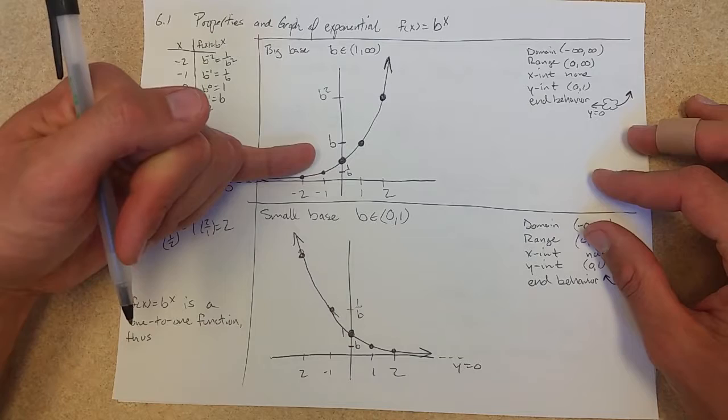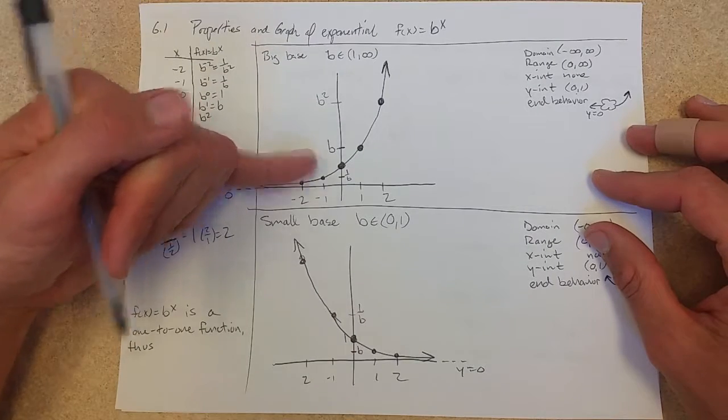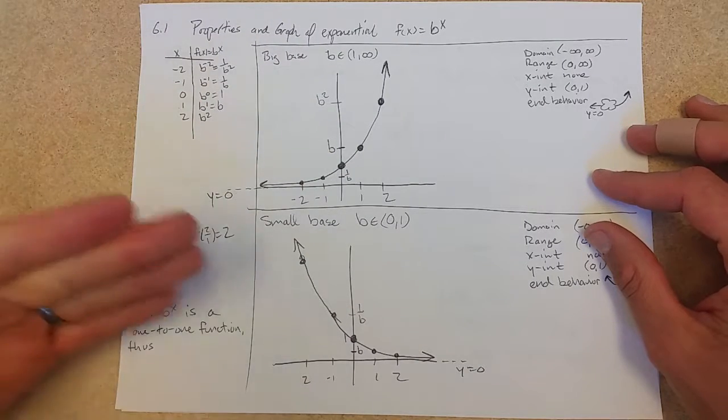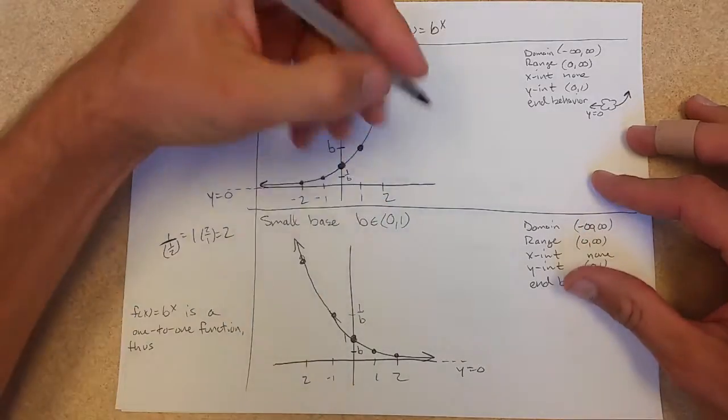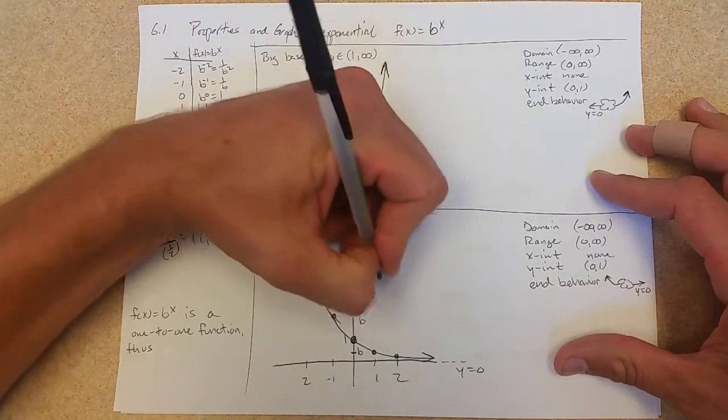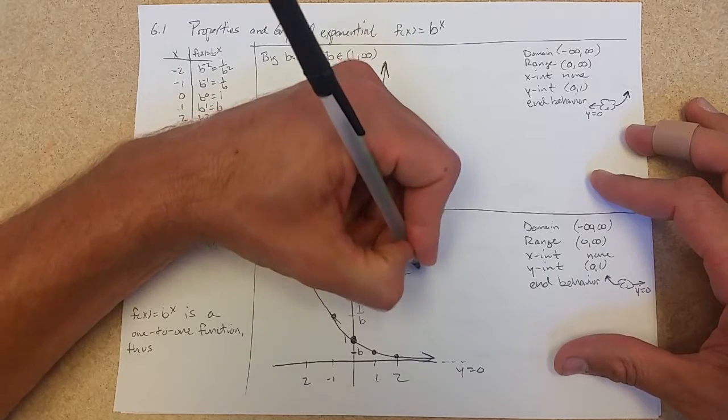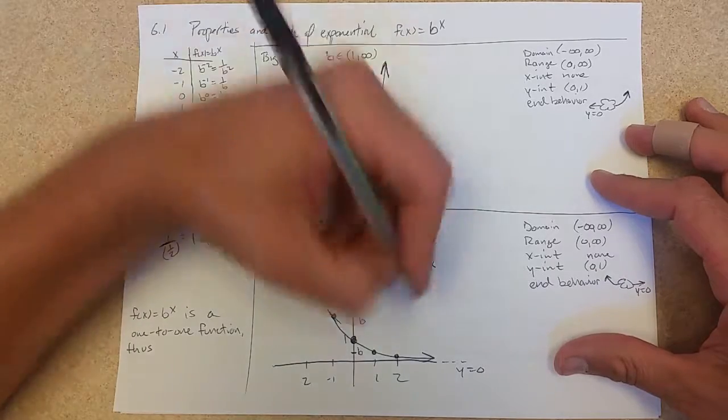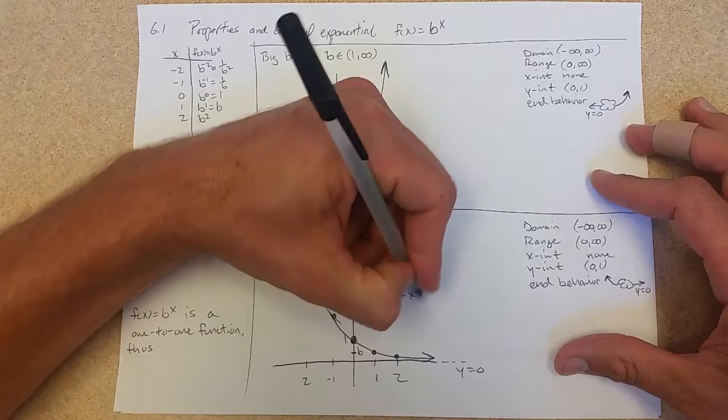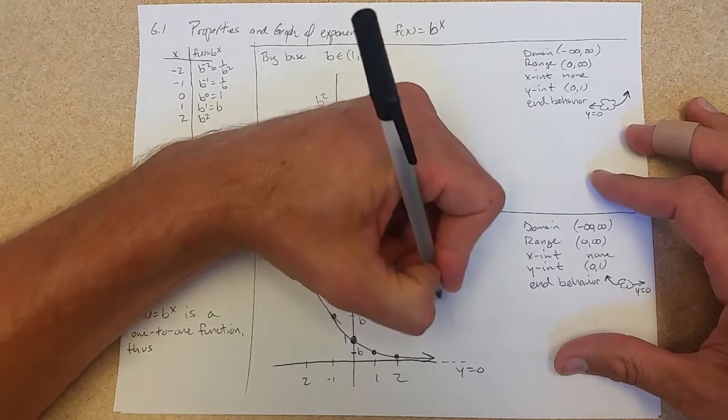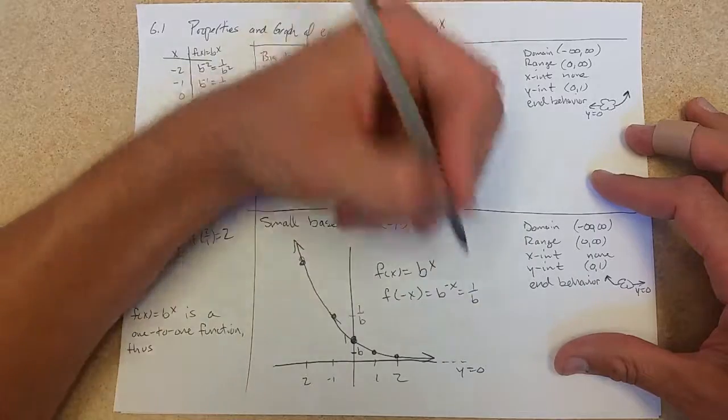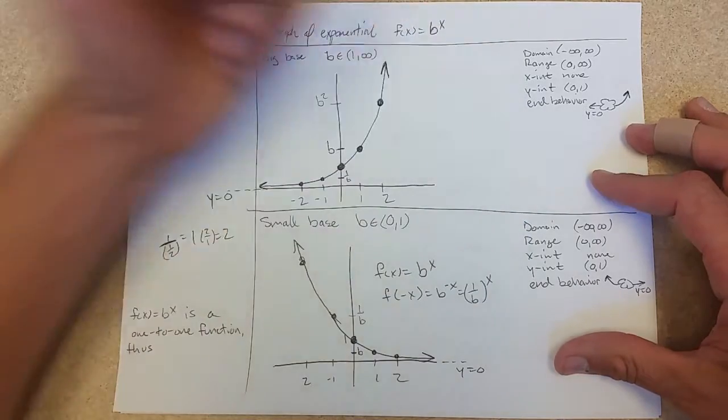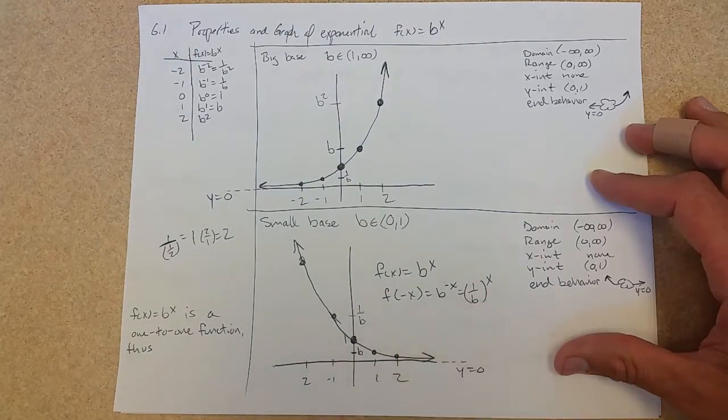So if you remember from transformations, there is one transformation that goes from this graph to this graph. What transformation is that? Horizontal reflection. Horizontal reflection, make the x negative.